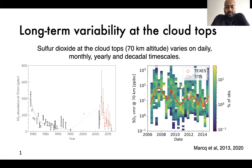The yearly and decadal long-term variability is particularly interesting because at this altitude in the atmosphere, both chemical and radiative timescales are very fast.